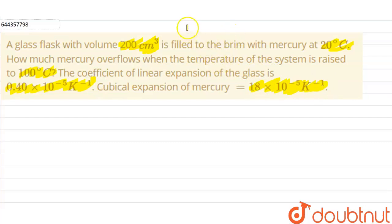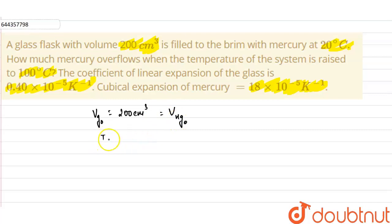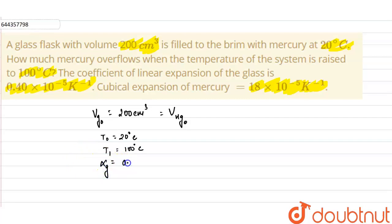In the given question, we have a glass flask having a volume of 200 centimeter cube. So the initial volume of the glass is 200 centimeter cube, which is filled with mercury, so the initial volume of mercury will also be 200 centimeter cube, and the temperature of the system is 20 degree Celsius. We need to find how much mercury will overflow if the temperature raises to 100 degree Celsius. The linear expansion coefficient of glass, alpha, is 0.4 into 10 raised to the power minus 5 per Kelvin, and the cubical expansion of mercury is 18 into 10 raised to the power minus 5 per Kelvin.